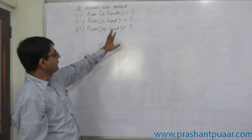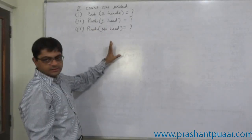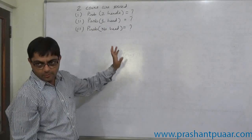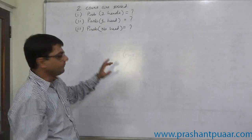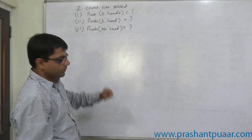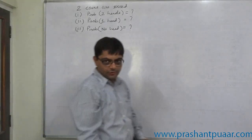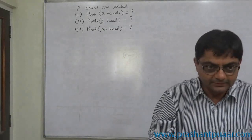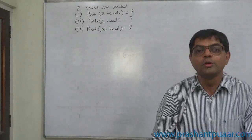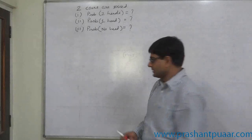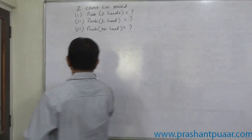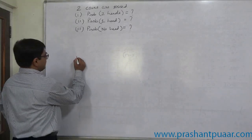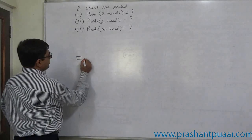What is the probability of getting two heads? What is the probability of getting one head? What is the probability of getting no head? Two coins are tossed. Again, the three-approach.